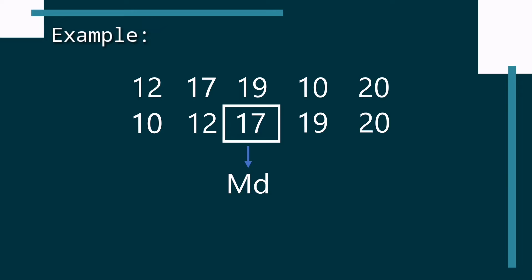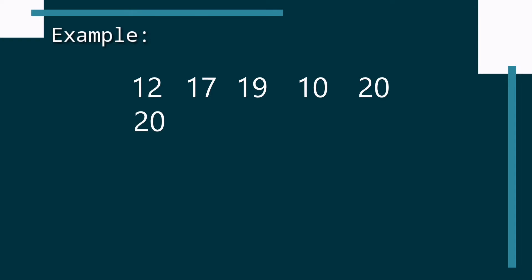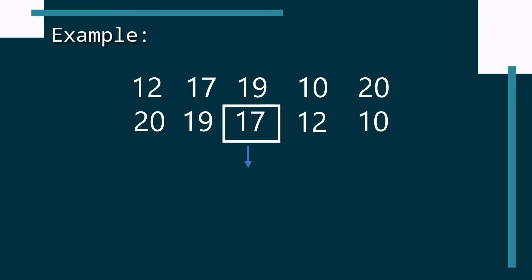What if we arrange the numbers in descending order? Again, we have the numbers 12, 17, 19, 10, and 20. Arranging them in descending order, we will have 20, 19, 17, 12, and 10. The number found exactly in the middle is still 17.